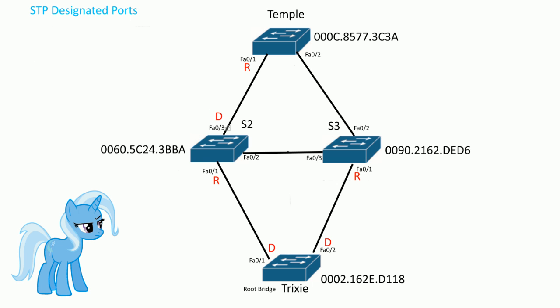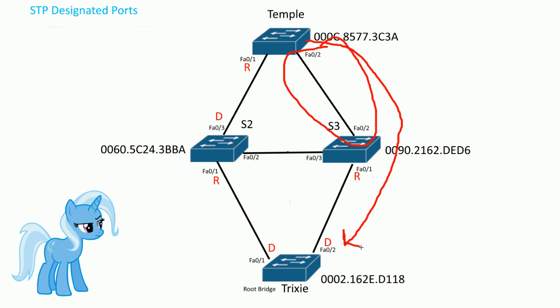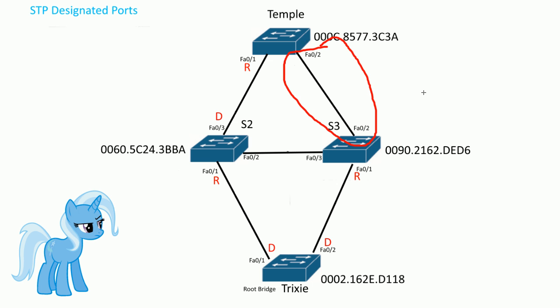Now let's look at the link between Temple and S3. Which side gets the designated role? The first step for designated ports is very similar to the root port rule — we look at the lowest cost to the root bridge. For Temple, the cost is 19 plus 19, which makes it 38. Switch 3 has a cost of 19 to the root bridge. Since S3 has the lowest cost, it wins the role of designated port for this link, so this side becomes the designated port.